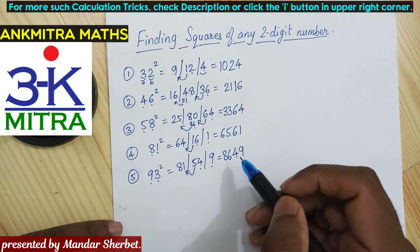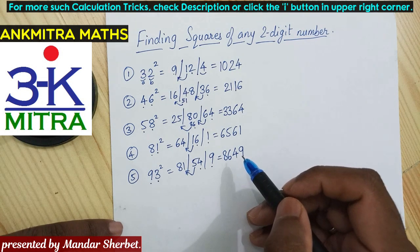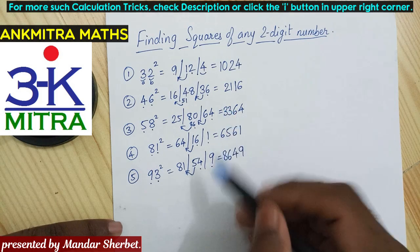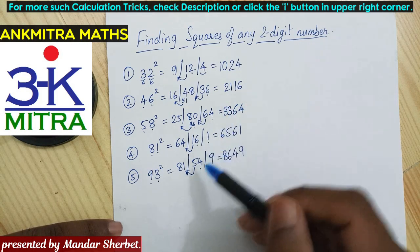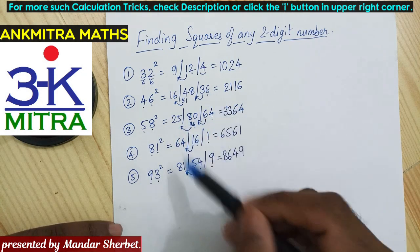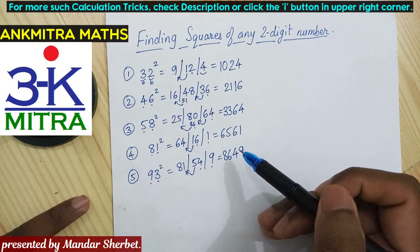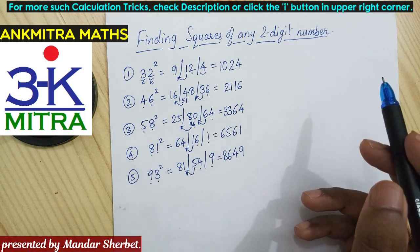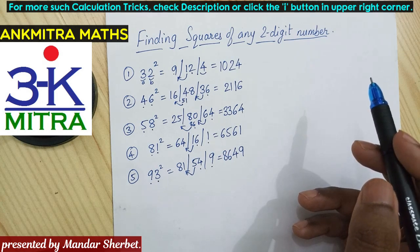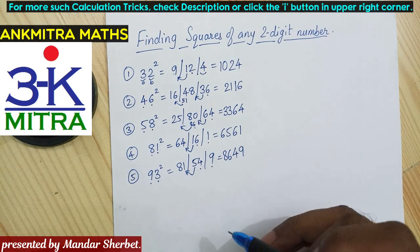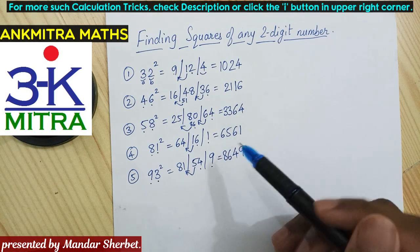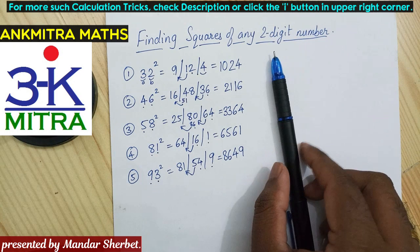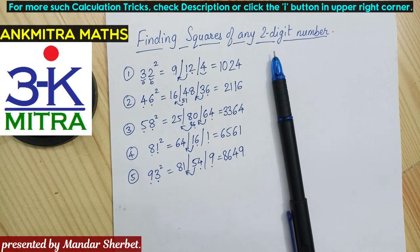In this fashion you can calculate the square of any two-digit number ending with digits other than zero and five, in minimum possible time. I'm excluding zero and five because finding squares of numbers ending with those digits is much faster using the trick I've already explained in a previous video — the link is in the description. In case of any difficulty, please write in the comments. If you like the video and would like more such tricks, let me know in the comments. Thank you.